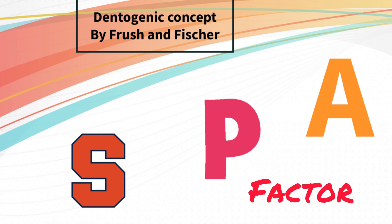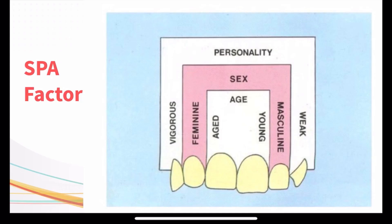Another name given for the dendogenic concept is SPA factor. The question asked may be about SPA factor or dendogenic concept. SPA: S stands for sex of the patient, P for personality, and A for age of the patient. This diagram clearly represents the SPA factor, showing how the features of the teeth change with sex, personality, and age of the patient.